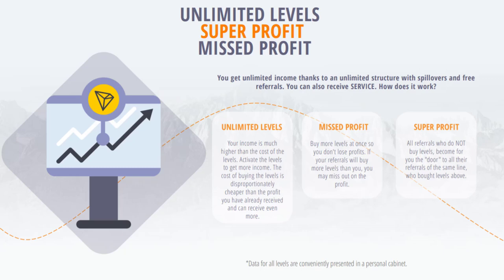How does it work? Unlimited level: your income is significantly more than the cost of the levels. Activate levels to earn more revenue. The cost of purchasing levels is disproportionately cheaper than the profits you have already received and can get even more. Lost profit: buy more levels at once so as not to miss out on profits. If your referrals buy more levels than you do, you may miss out on profits.